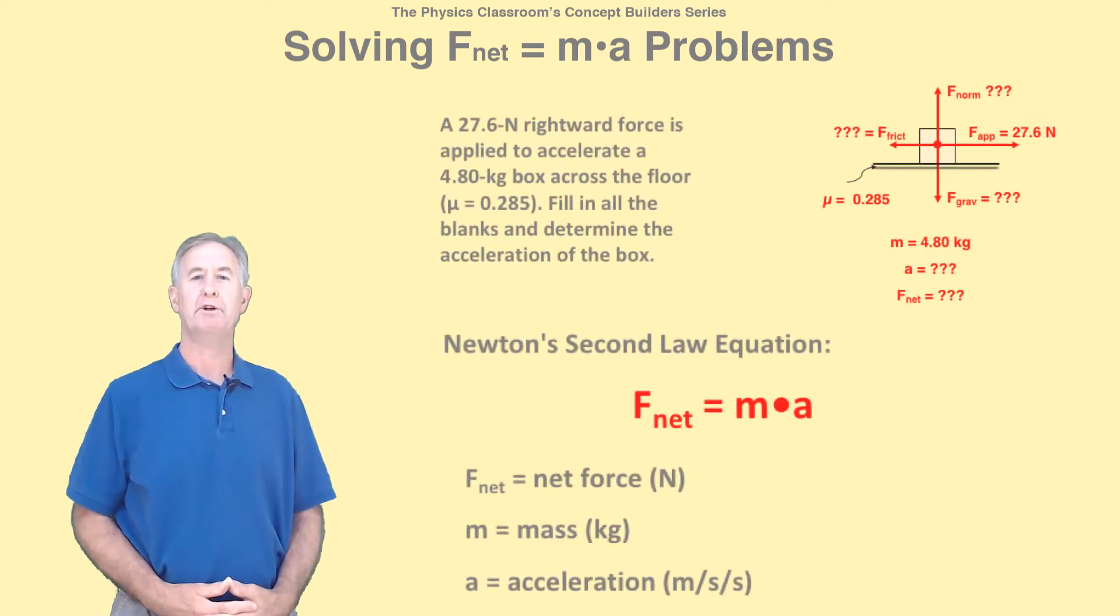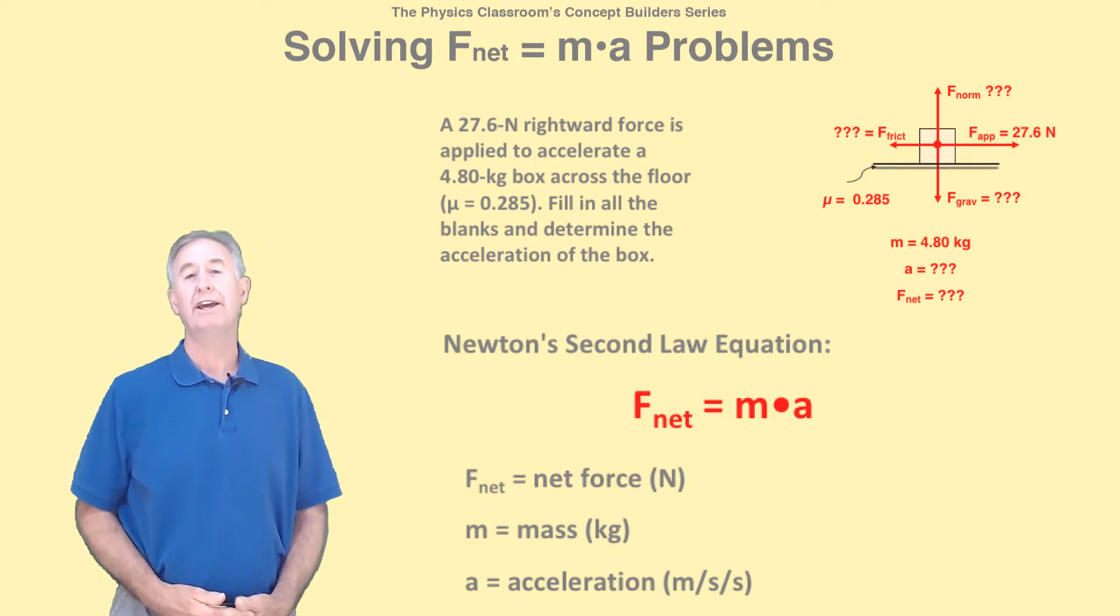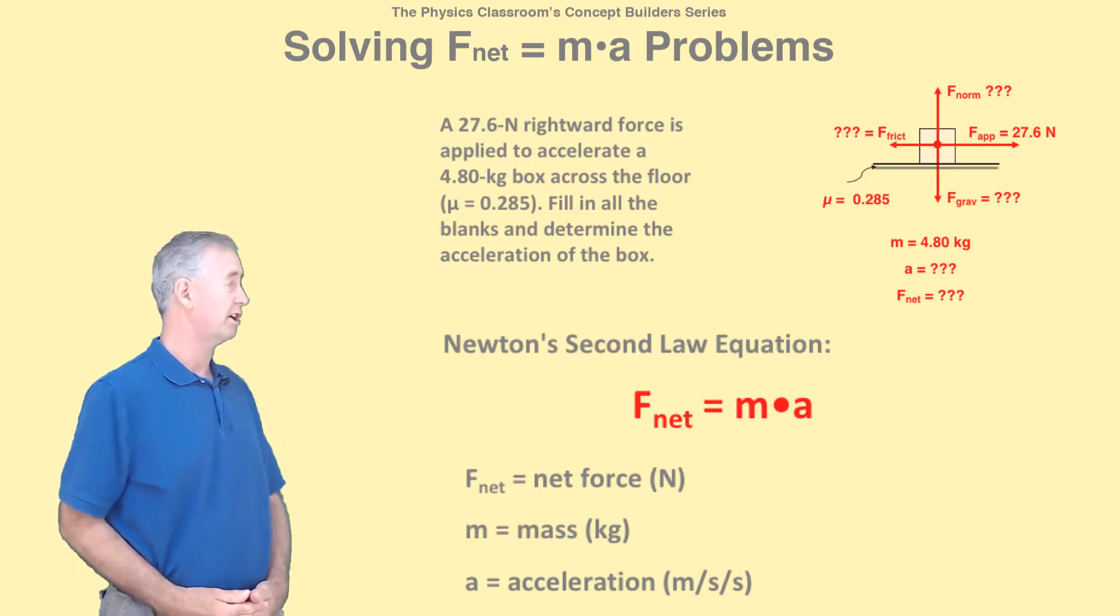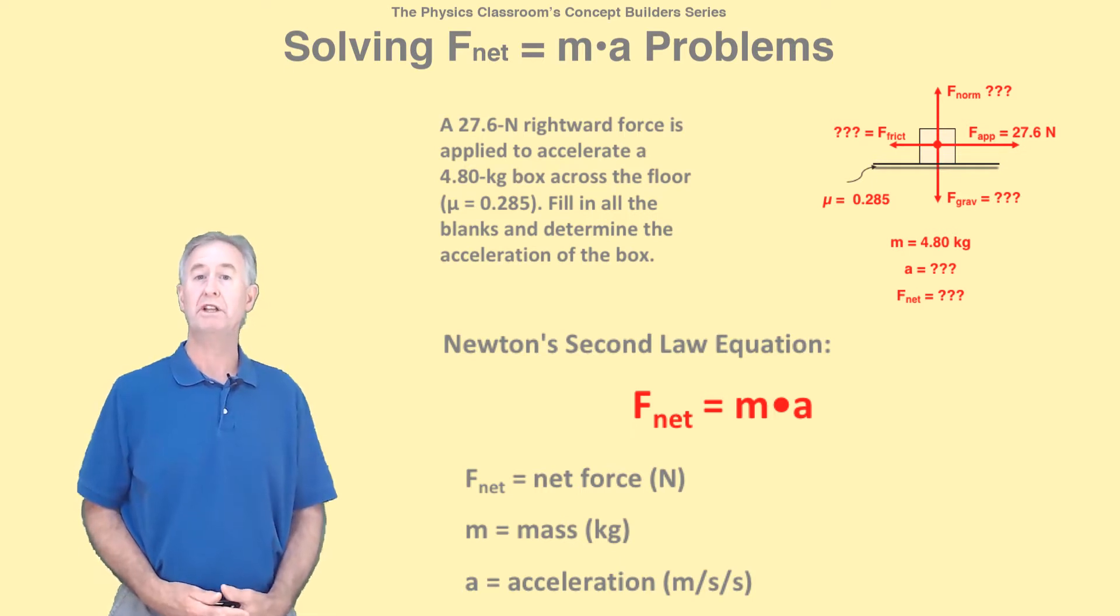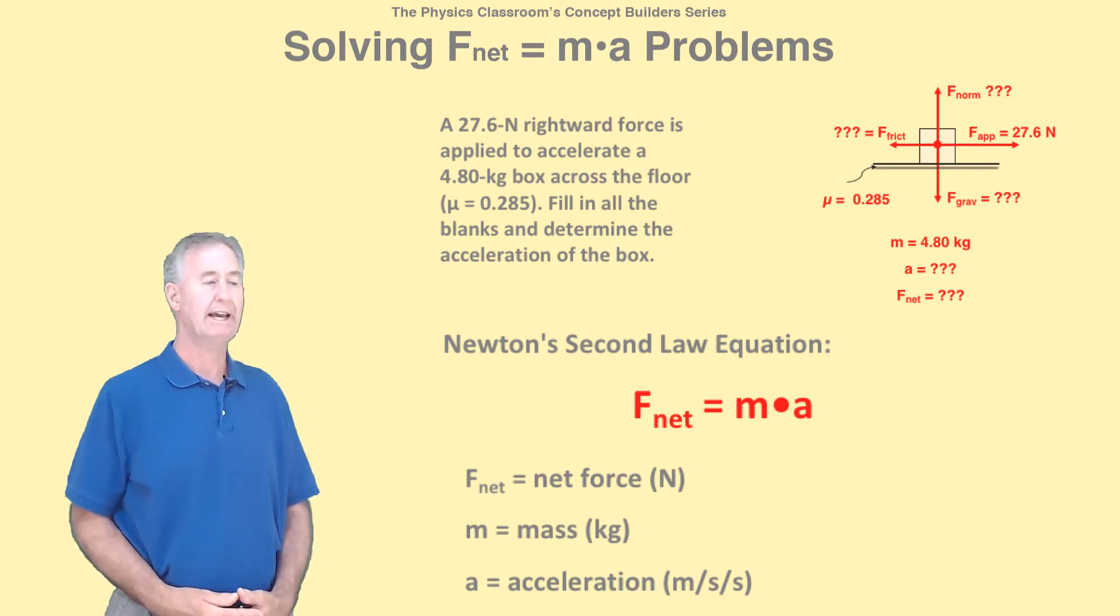A highly popularized equation in physics is f net equal ma. It is often written as a equal f net over m, and referred to as Newton's second law equation. It expresses the relationship between acceleration, net force, and mass, and it is often used to solve problems like this one.